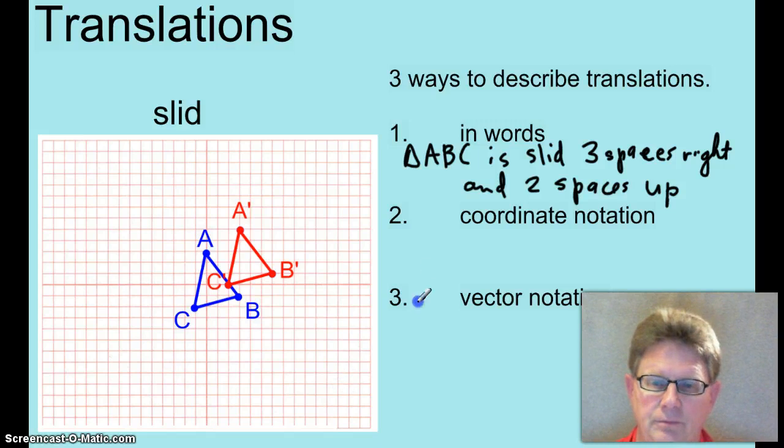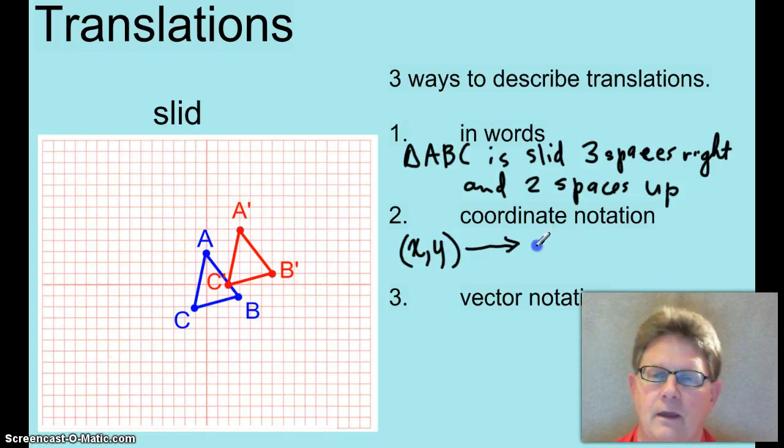In coordinate notation, we're going to start out with a point (x,y), and it's going to be slid, so we're going to write an arrow for a slide. And then we're going to write, well, it went to the right, so x plus 3, and it went up to y plus 2.